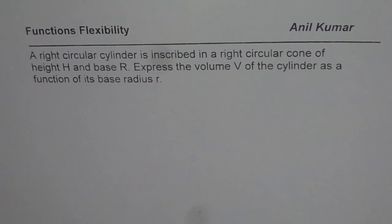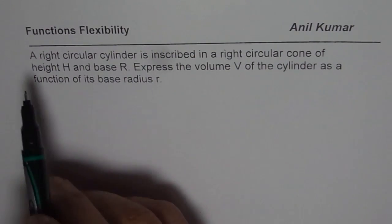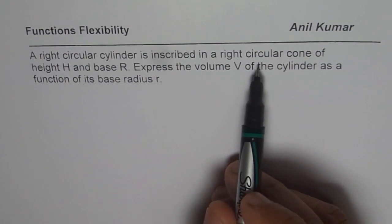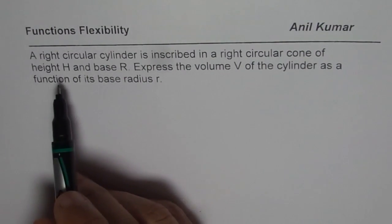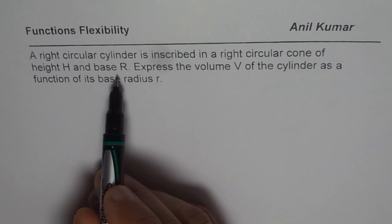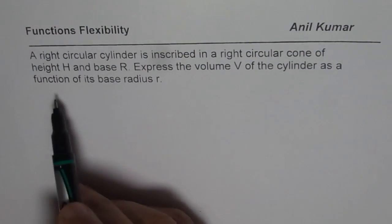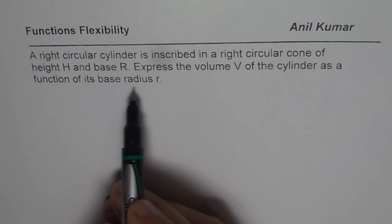I'm Anil Kumar and in this series we are trying to understand how to relate a function with another function. We have taken up many geometrical shapes and now we are into three dimensional geometrical shapes. The question here is: a right circular cylinder is inscribed in a right circular cone of height H and base R. Express the volume V of the cylinder as a function of its base radius r.